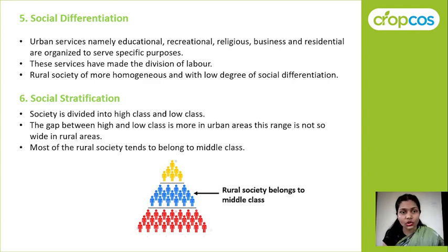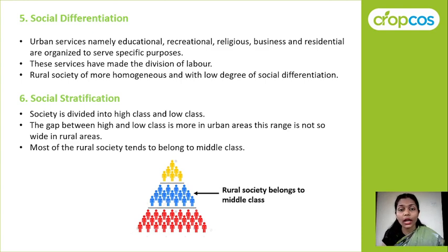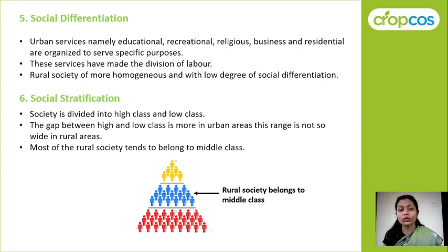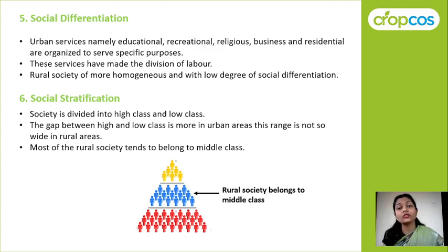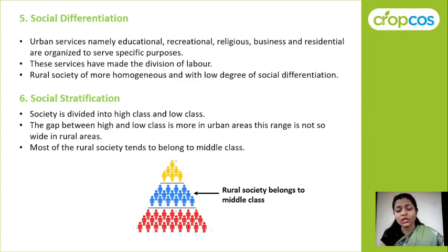The next characteristic is social stratification — the division of society into high class, middle class, and low class. The gap between high and low class is more in urban areas; the rich are much richer and the poor live in slum areas. In rural society, the stratification gap is smaller and the maximum people belong to the middle class.